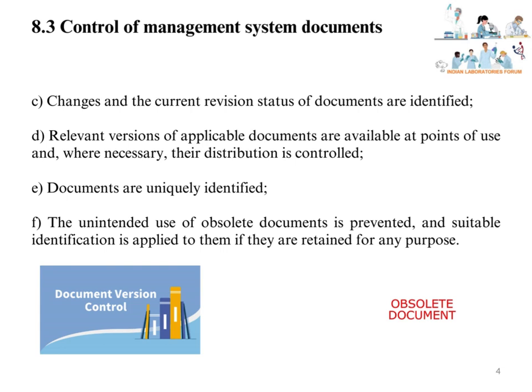Changes and the current revision status of documents are identified. Version control should be implemented and all changes should be identified when a document is revised. Relevant versions of applicable documents are available at points of use and, where necessary, their distribution is controlled. All employees should have controlled access to the current version of documents for performing specific tasks.